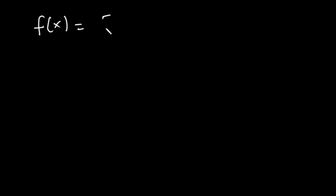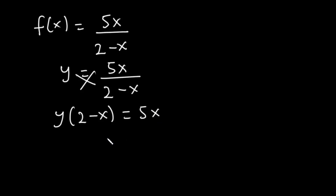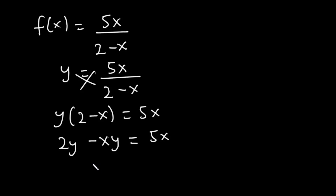Let's try this one. Given a function f of x is equal to 5x divided by 2 minus x, how do we solve for the range? As usual, we are going to represent f of x with y and then make x the subject. So y is equal to 5x divided by 2 minus x. Now we are going to cross-multiply, so we have y times bracket 2 minus x is equal to 5x. Expanding: y times 2 is 2y, and y times x is xy, which gives us 2y minus xy is equal to 5x.